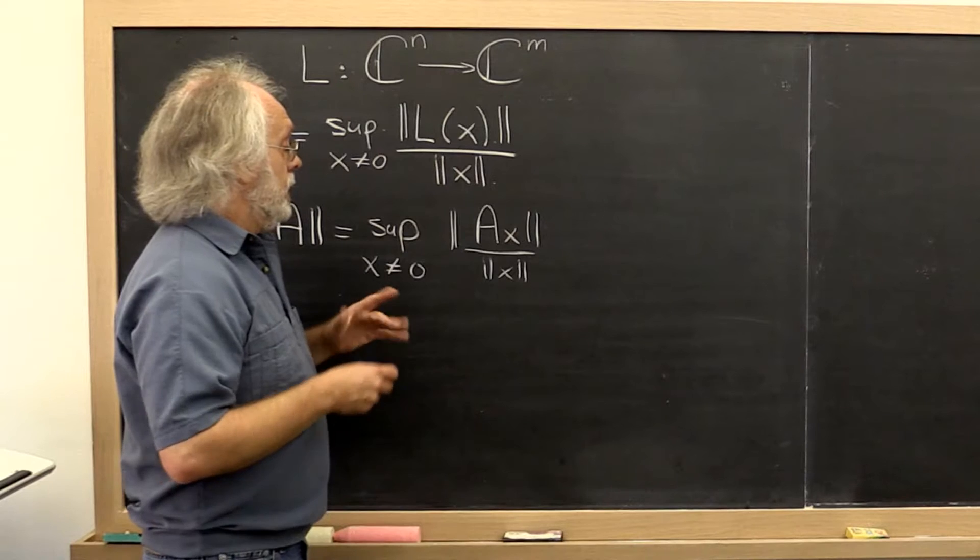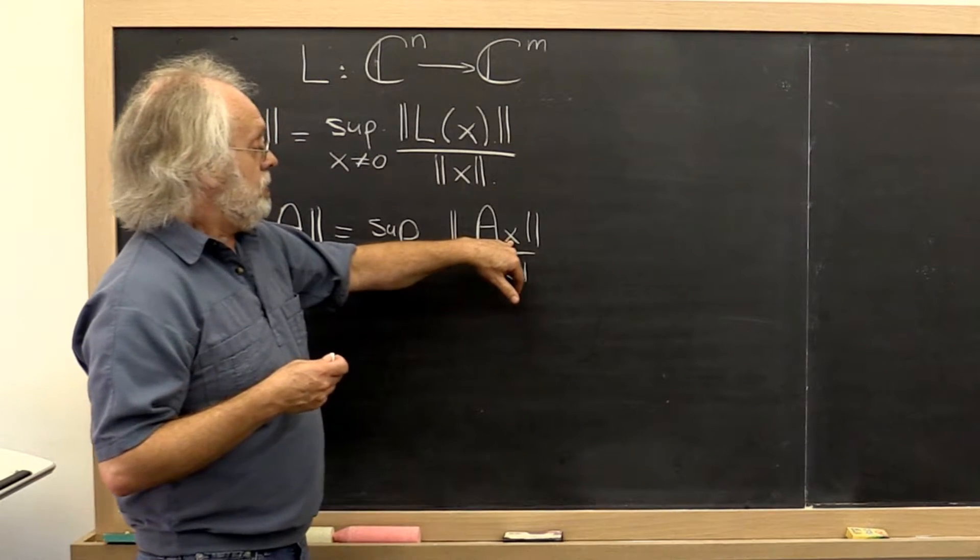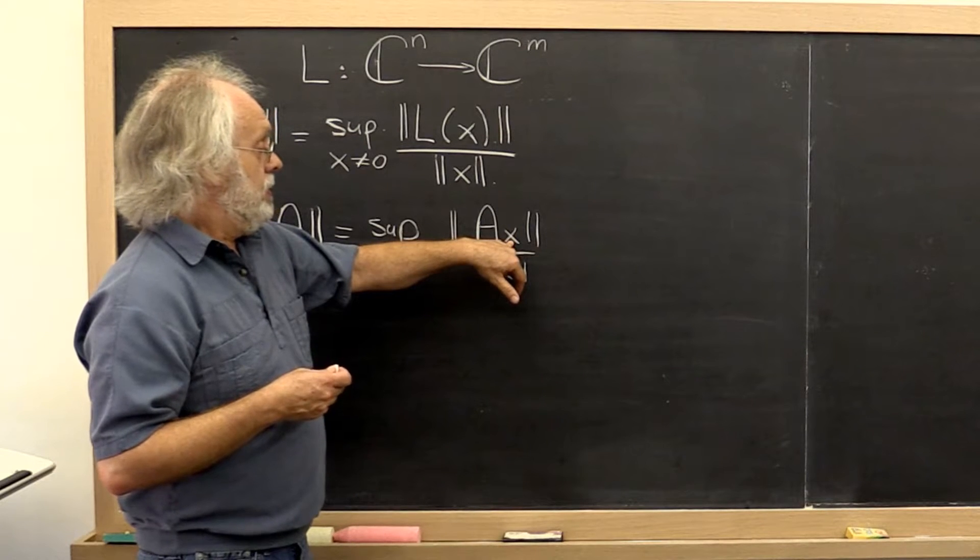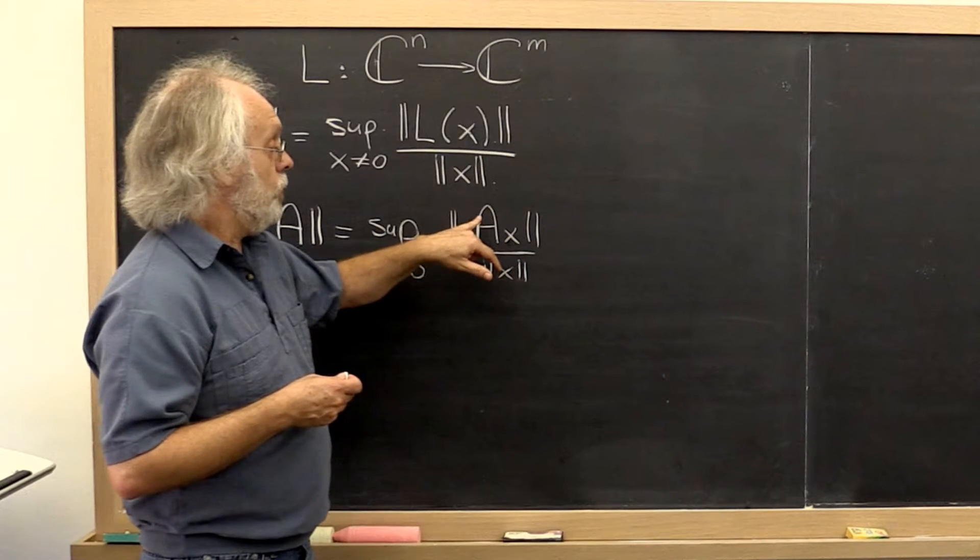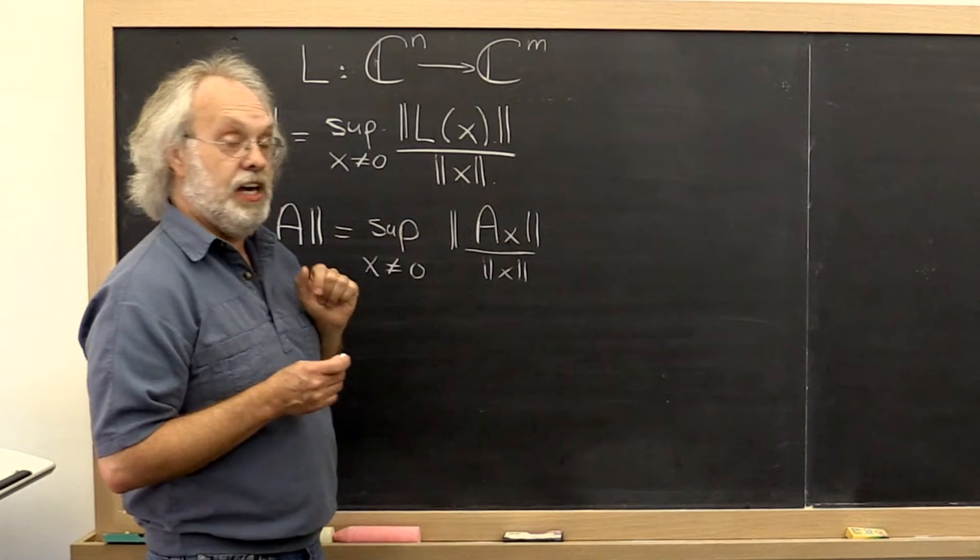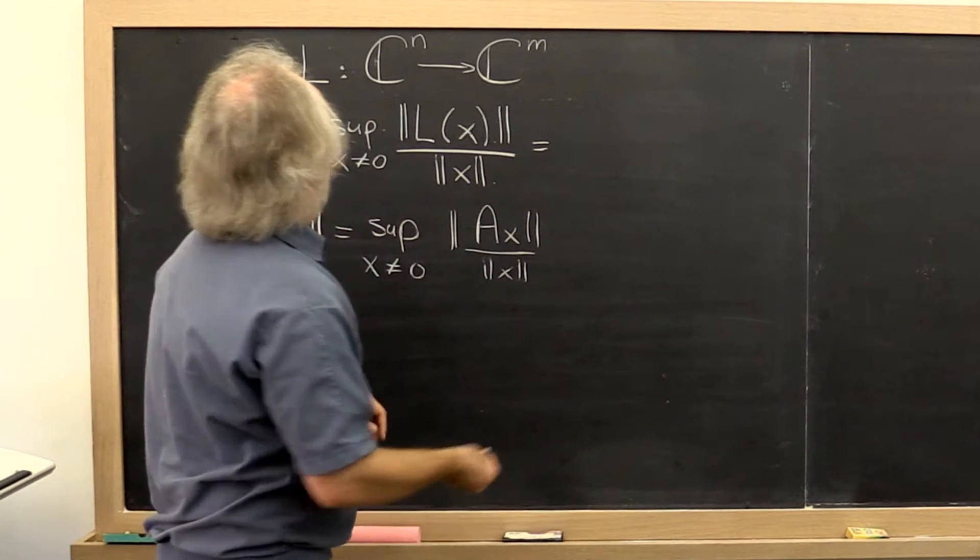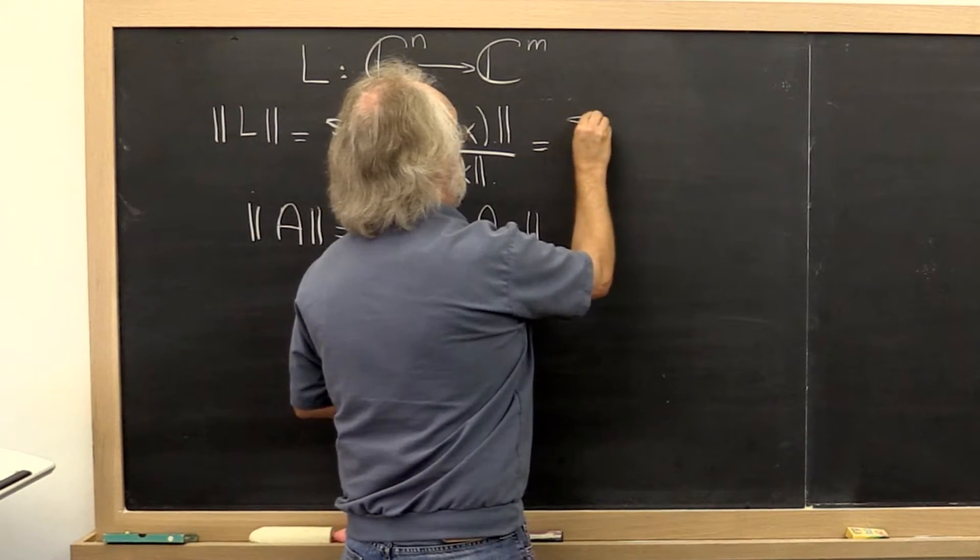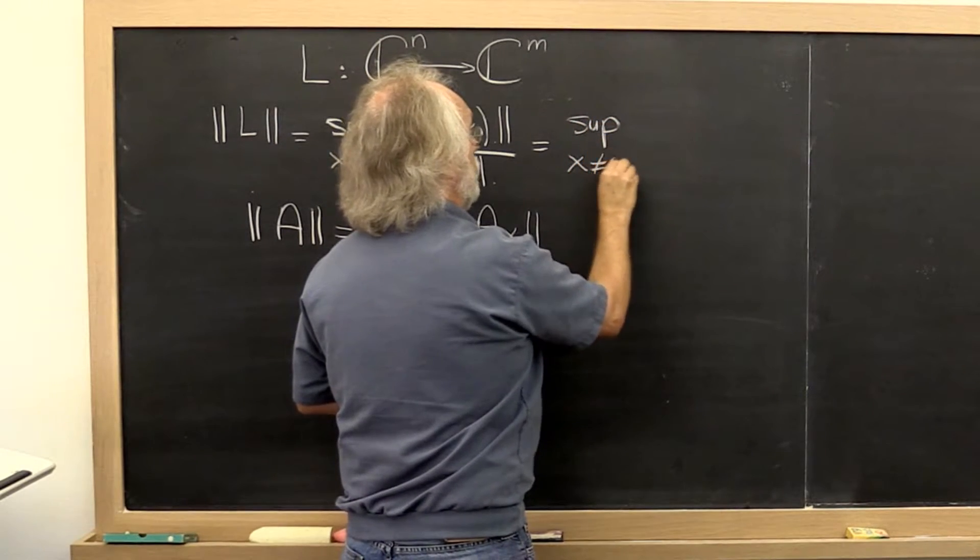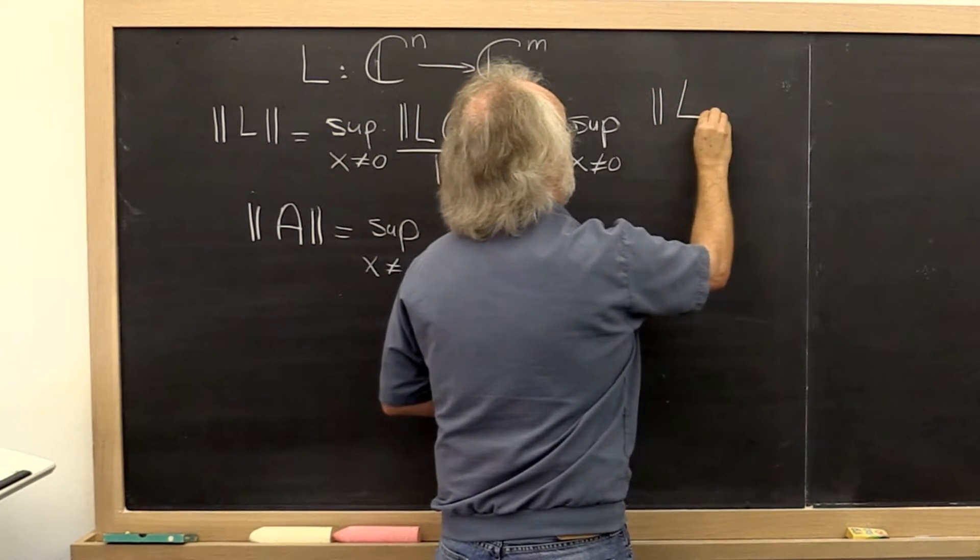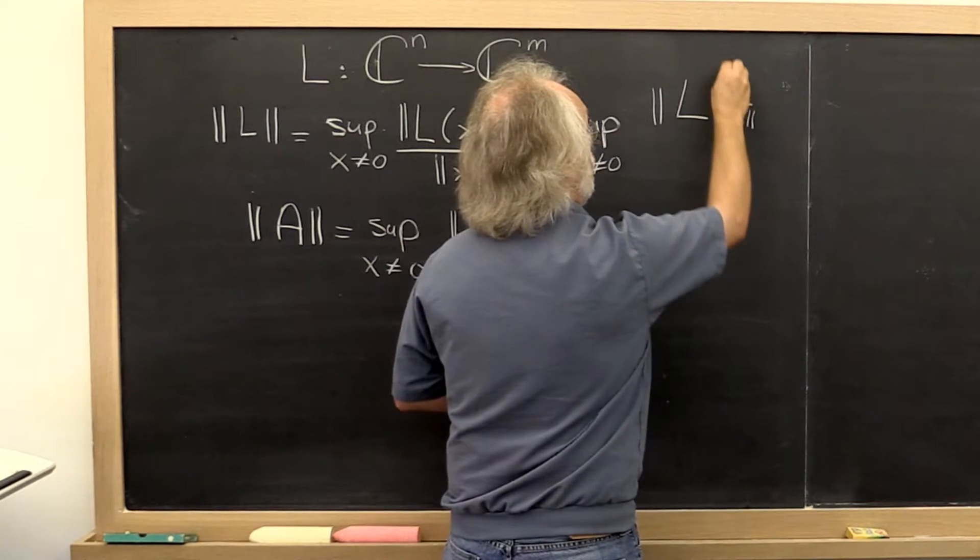Now, it actually turns out that because when you scale a vector x, you can scale it first and then transform it, or you can first transform it and then scale it, it turns out that up here you can say, we could say the supremum over all x not equal to 0 of L of x divided by the norm of x.